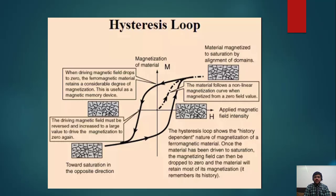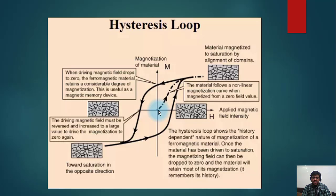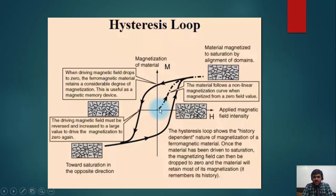Let me explain hysteresis loss in more detail. Starting from zero magnetization — because the transformer is magnetized by alternating currents — it will keep magnetizing in one direction, then demagnetize, then magnetize in the other direction. In one instance the north pole will be on top and south on the bottom; in the next instance it reverses. For example, when the transformer is totally de-energized and I start to magnetize it, the curve goes up and the transformer is magnetized. Then, because it is a cycle, it will go back.